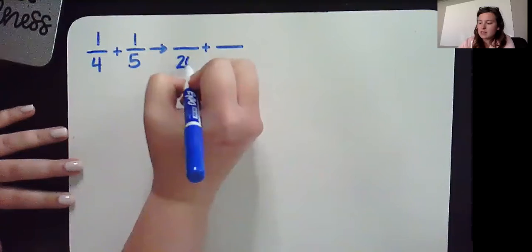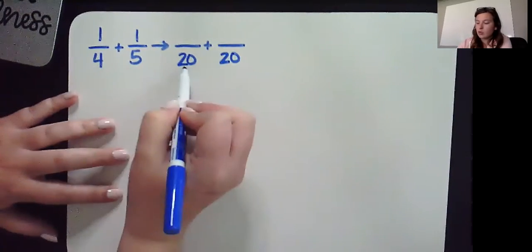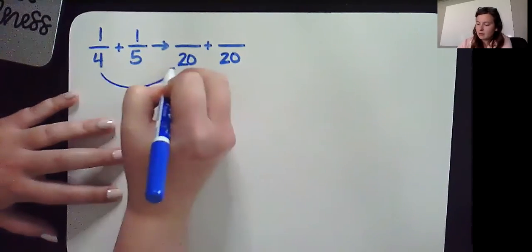We know from our last problem that the common denominator here will be 20. To turn the 4 into 20, we multiplied by 5.